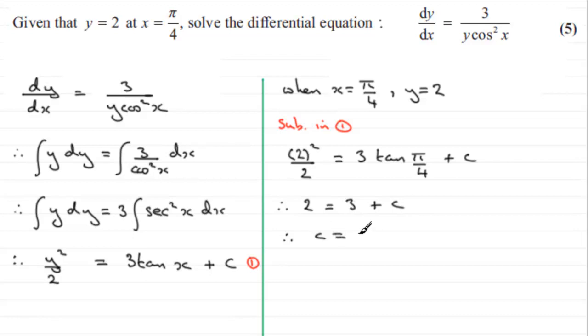From here it follows that if we take 3 from both sides, C equals 2 minus 3, which is -1. What we do now is substitute this back into equation 1.